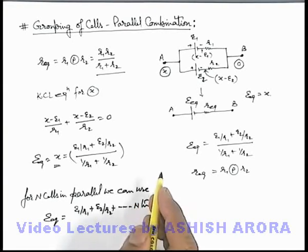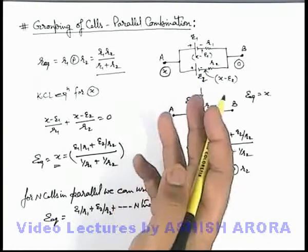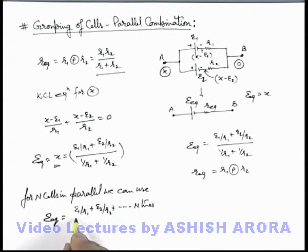But you must be very careful if there is one cell which is oppositely connected, then we must use a negative sign with that cell's EMF. And in denominator it'll be 1/r1 + 1/r2 plus and so on, it'll always be positive, so it'll be up to 1/rn.